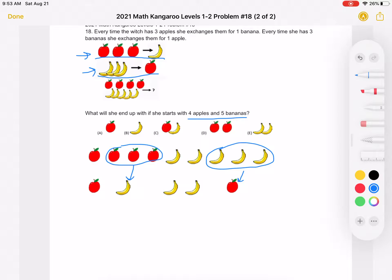Now what can she do? Well we see we have three bananas. Whenever we have three bananas, we exchange them for an apple.